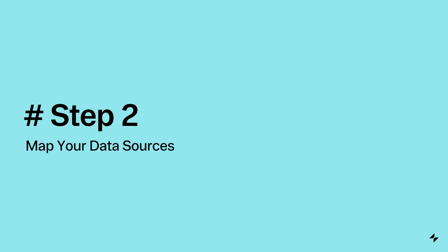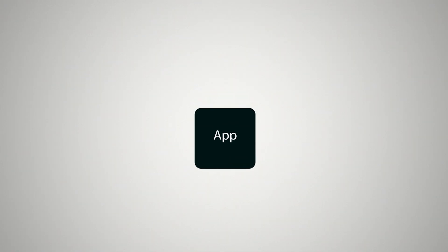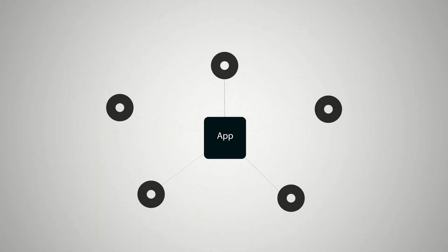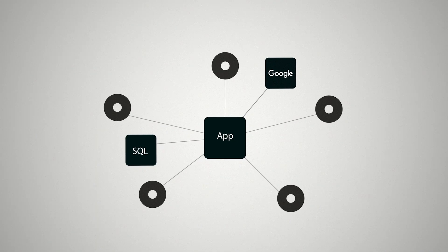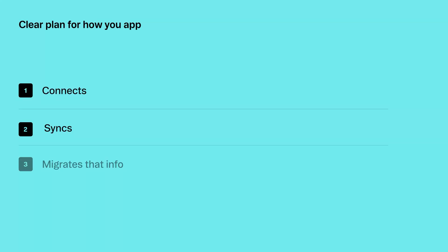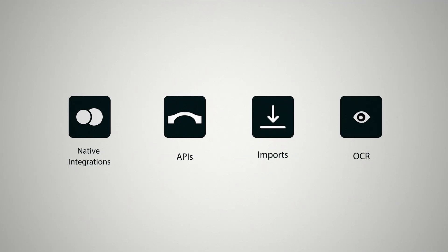Step 2: Map your data sources. Figure out where your data lives. Many processes still run out of spreadsheets or disconnected tools — your internal app can become the connected tissue that centralizes that data. Whether your data lives in SQL databases, Google Sheets, paper forms, or SaaS tools, you will want a clear plan for how your app connects, syncs, and migrates that info. Some platforms support native integrations; others use APIs, imports, or even OCR for physical docs.